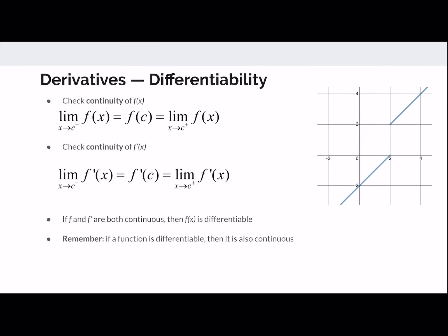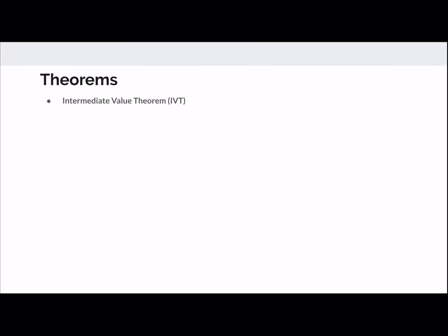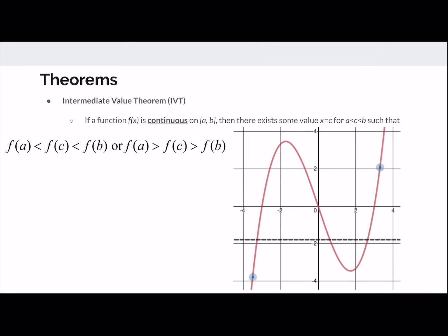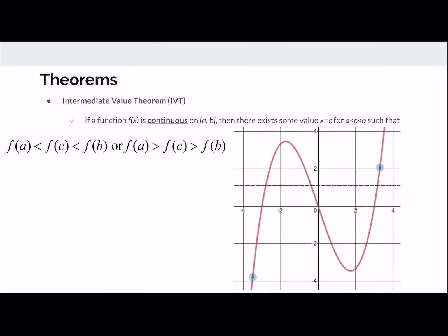Here's an example of why continuity must be checked: a function with slope 1 on both sides might seem differentiable, but if it's not continuous, it's not differentiable. The Intermediate Value Theorem states that for a continuous function on a closed interval from A to B, there is some x value between A and B where the function hits every value in between — the function may go above, but it will pass through all intermediate values.